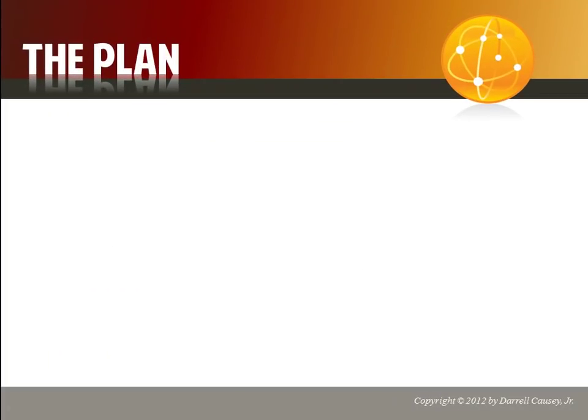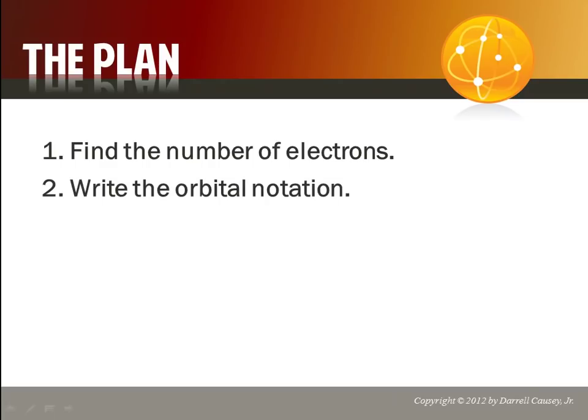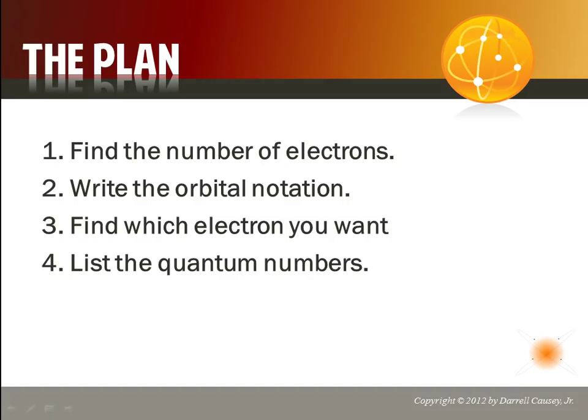The plan. First, find the number of electrons. Then, write the orbital notation, find which electron you want, and list the quantum numbers. Sounds simple, doesn't it?